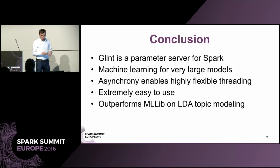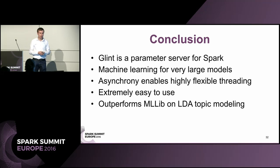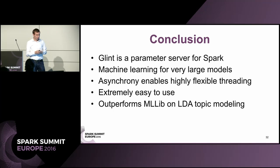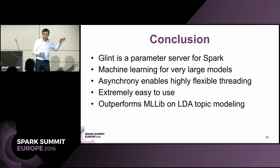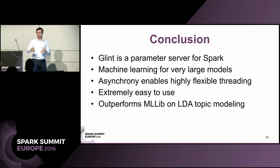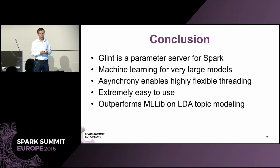To conclude: I've introduced Glint, an asynchronous parameter server for Spark. It allows us to do machine learning for very large models. Its asynchronous design enables highly flexible threading mechanisms, and we can experiment with different execution contexts. It is extremely easy to use — just a few lines of code and you're up and running. And it outperforms MLlib specifically on the task of LDA topic modeling.